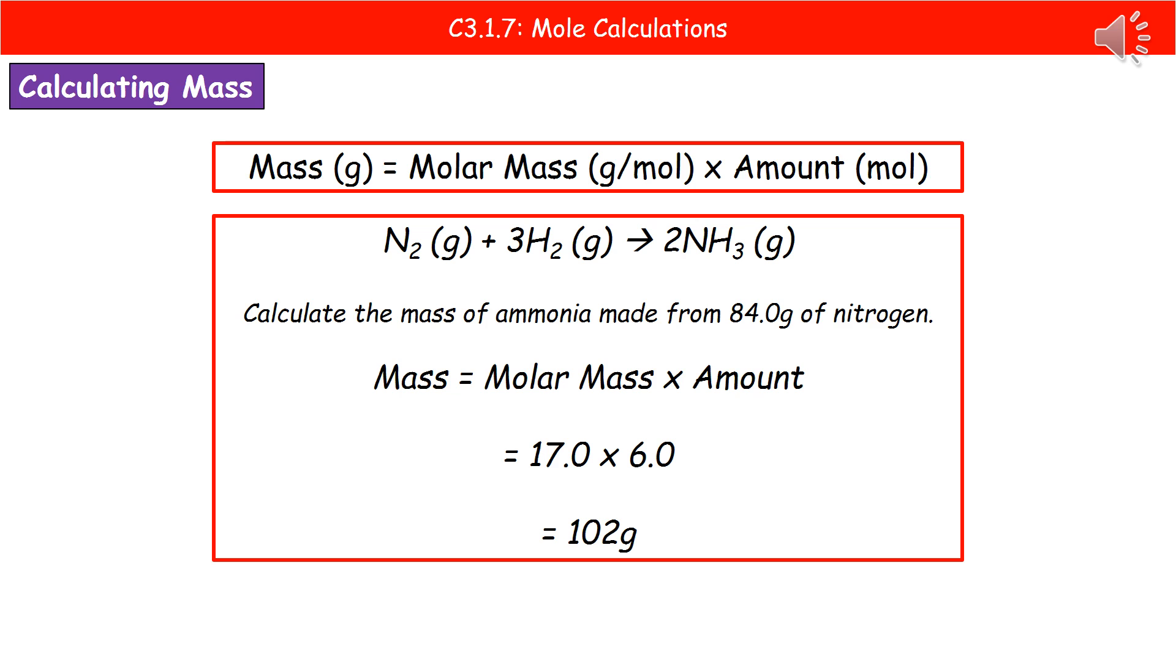The last thing to do is to work out the actual question. We're going to calculate the mass of ammonia that we made. So we go back to our equation at the top. The mass in grams is the molar mass times the amount in moles. We now know the molar mass of our ammonia, which is 17. We know that there are 6 moles of it being made. So 17 times 6 gives us 102 grams.